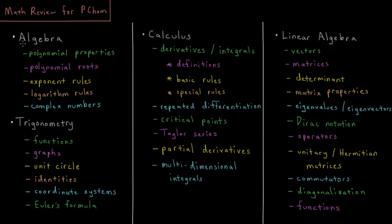Starting off with algebra: being able to perform algebra fluently is absolutely vital for success in physical chemistry. You need to be able to manipulate equations, solve for variables, solve quadratic equations, equations with exponentials and logarithms, and work with complex numbers. This includes how to add, multiply, factor, and solve polynomials, how to get the roots of polynomials, how to work with exponents like e to the a times e to the b versus e to the a to the b, how to manipulate logarithms, and how complex numbers work, including things involving the square root of negative one.